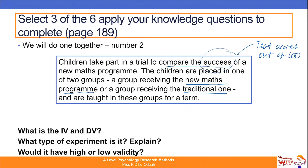What type of experiment is it? In this particular study, it's taken place in the children's school environment, so we may argue it is a field experiment — because it's taken place in their natural environment. It's not a natural experiment because the independent variable is not naturally occurring; it's something the researchers are manipulating themselves. In terms of validity, this research would have high external validity because of the setting, and also high internal validity because the researcher is able to establish cause and effect by manipulating the independent variable.